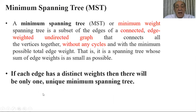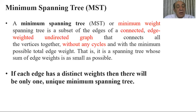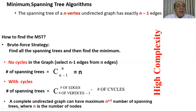If the edges have distinct weights, there will be only one unique minimum spanning tree. If there are repeated weights, we may generate more than one spanning tree, but the cost will be equal. As a tree, the spanning tree has n minus one edges.